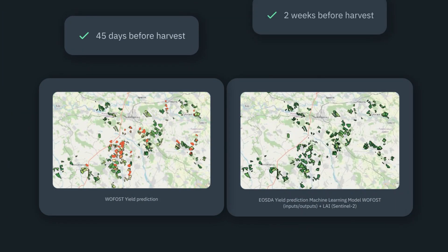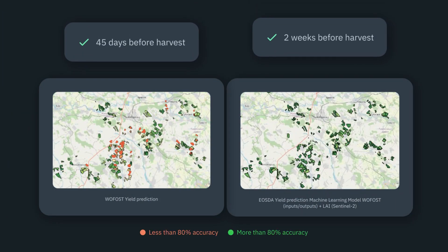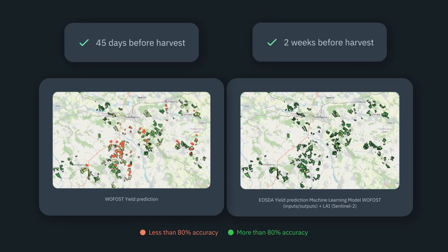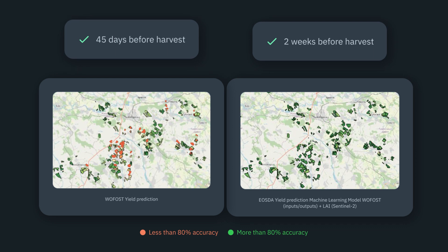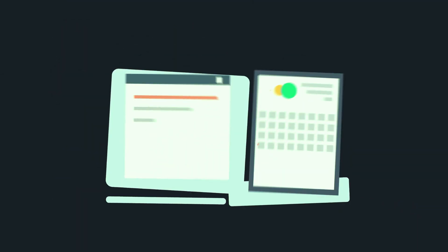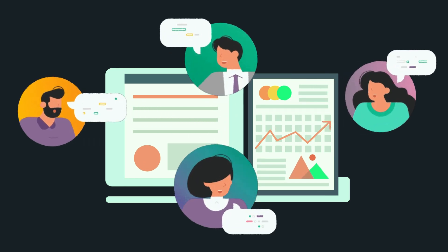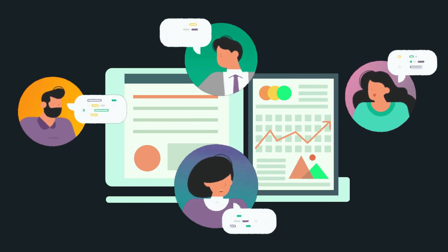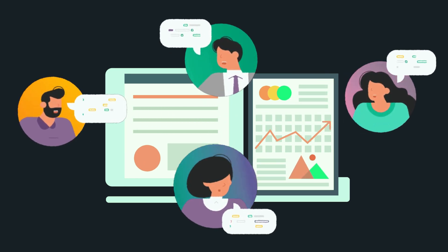You'll get several reports — one to two months and two weeks before the harvest. Once the results are delivered, we'll have a retrospective meeting to discuss possible improvements for the next year.